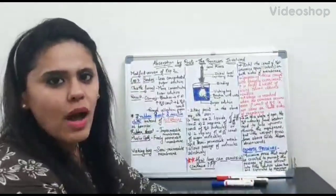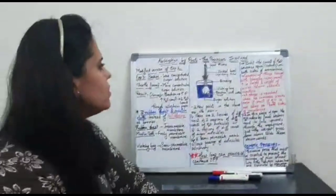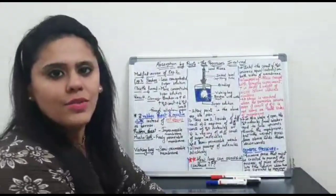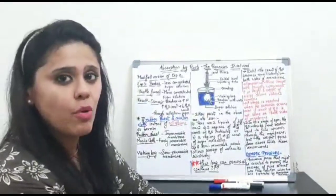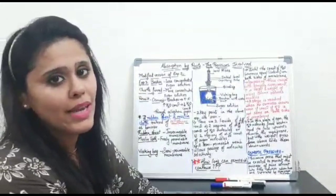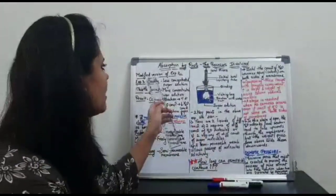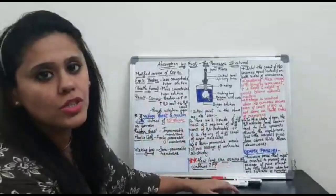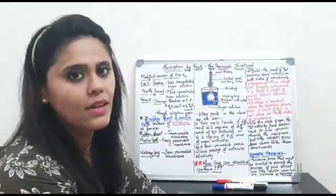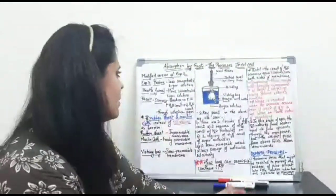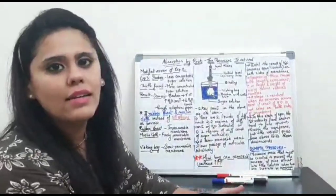Hello students, welcome back to our third slide of this chapter, that is absorption by roots, the processes involved. As we were clear about the process of osmosis in the last slide, we had demonstrated and understood the experiment of osmosis. In today's slide, we have to learn about the modified version of that experiment. To understand it, we need to quickly revise what we had done in the last slide.